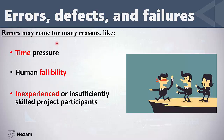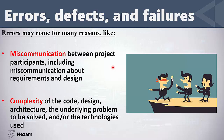Why do errors happen? The first reason is time pressure — we don't have much time, so we make more mistakes. The second is human fallibility — we are human and we make mistakes. Third is inexperienced or insufficiently skilled project participants. Fourth is miscommunication between project participants — if the person gathering requirements doesn't deliver them clearly, the design and code will likely have problems.